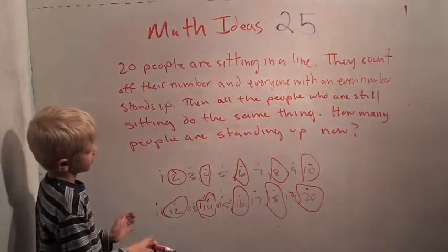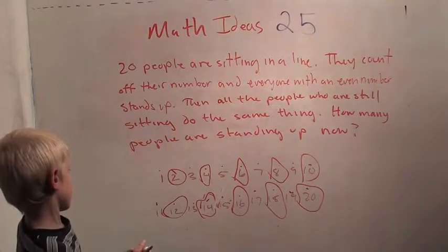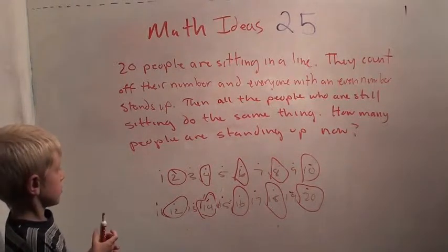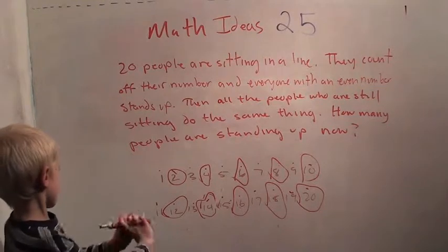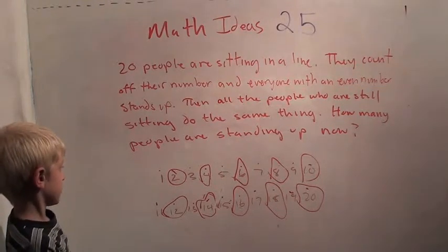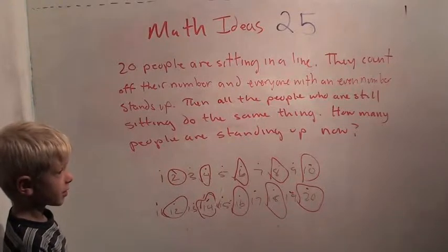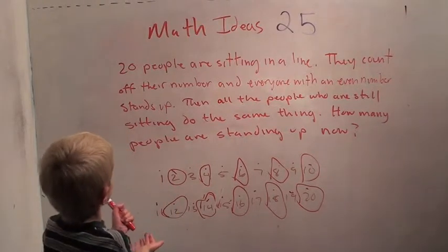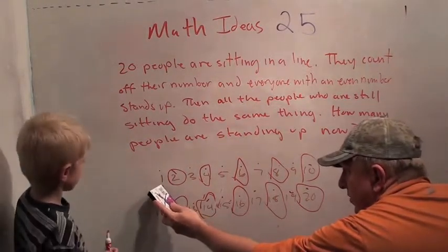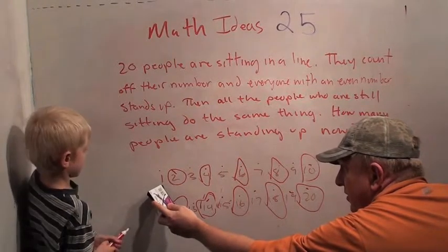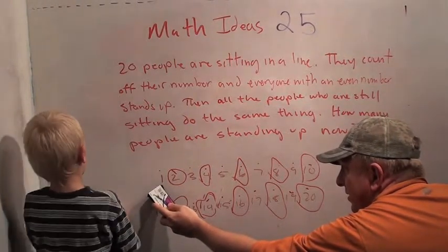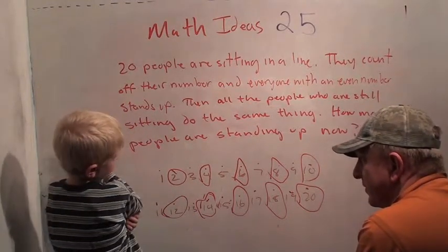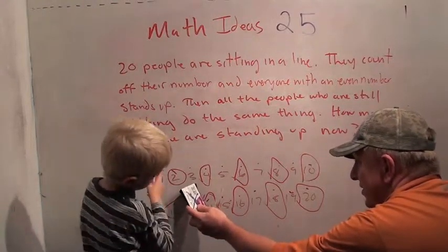Very good. So the people who are circled all stood up. Now we have to do it again with only the people who are sitting. Okay? So who's the first person to stand up now? Don't circle it. Just tell me who it is. It's one. Well, remember only the people with even, when they count off, only the people with even numbers stand up. Okay? So one is still one. But who's two now of the people who are sitting? Who's number two?